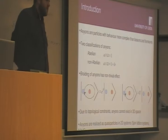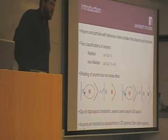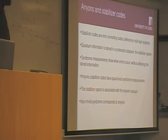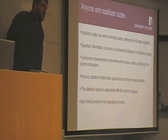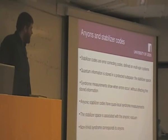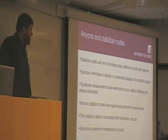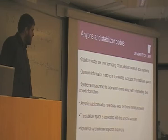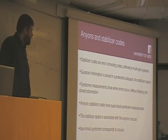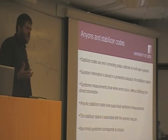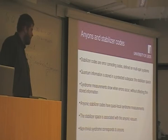But they can exist in two-dimensional space, so we can realize them as quasiparticles in 2D systems like spin lattices and the fractional quantum Hall effect. We consider those which are realized on spin lattices, specifically those which can be realized as stabilizer codes. In general, stabilizer codes are error-correcting codes which are defined on multi-spin systems. You choose a subspace of this larger Hilbert space which you're going to protect. You call this the stabilizer space, and this way you can store quantum information.